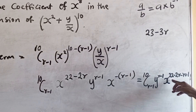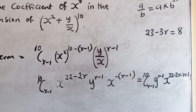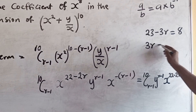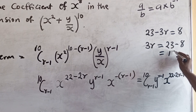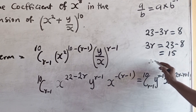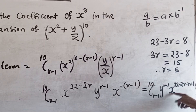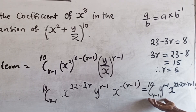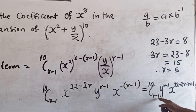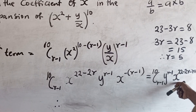We are looking for the coefficient of x raised to the power 8, so we need the power of x here, which is 23 minus 3R. We equate this to 8 and find R. So 3R equals 23 minus 8, which equals 15, therefore R equals 15 over 3, which is 5. That is the R that makes the power of x equal to 8.